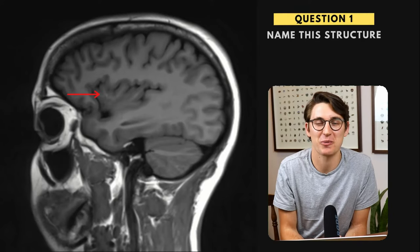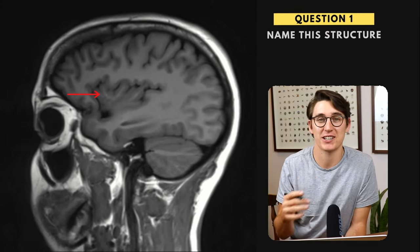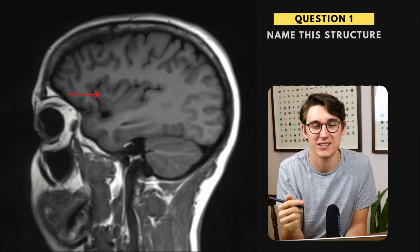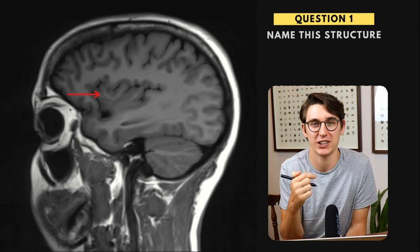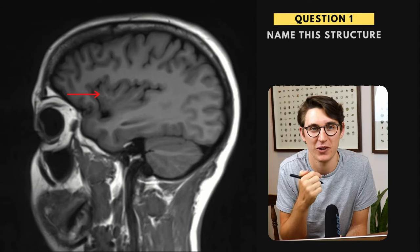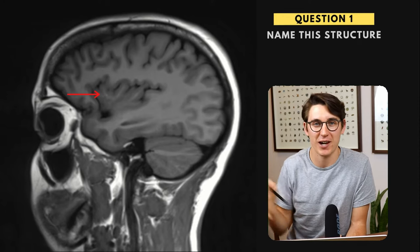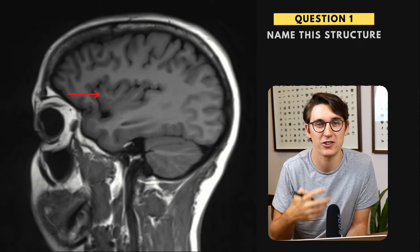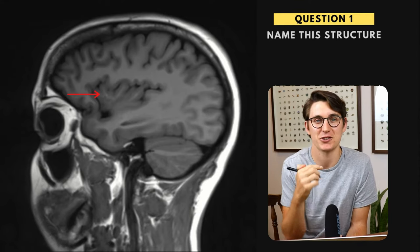Hello everybody, welcome back. Today we're going to be going through 25 different neuroanatomy cases. I've tried to choose anatomy that is clinically relevant, that's going to help you in your careers, as well as choosing imaging slices that allow you to gain a better appreciation for where the different anatomical structures lie in relation to one another. For me, neuroanatomy has so much different anatomy crammed into such a small space, and one of the best ways of becoming competent with neuroanatomy is to start realizing where the different structures are in relation to one another.